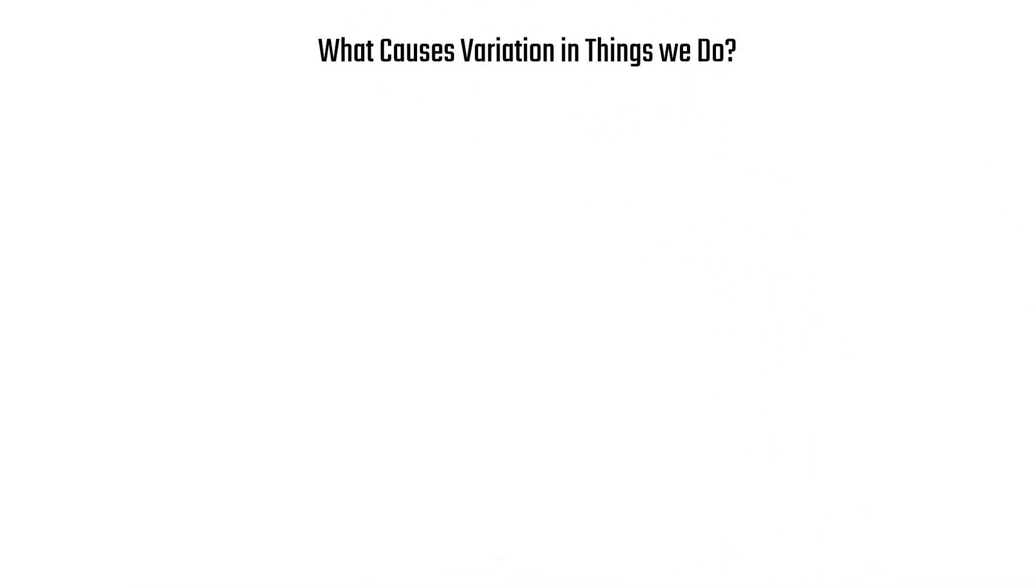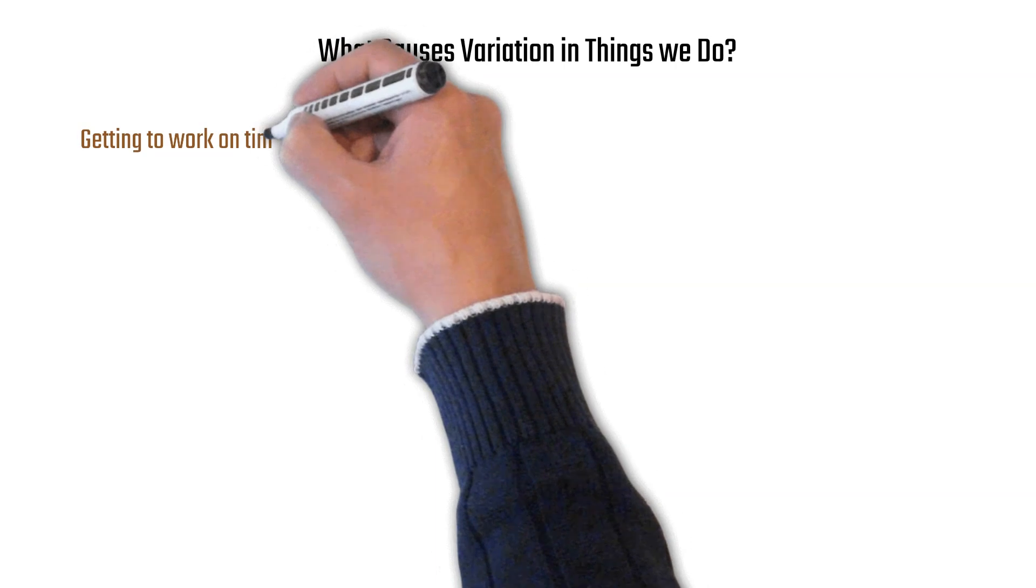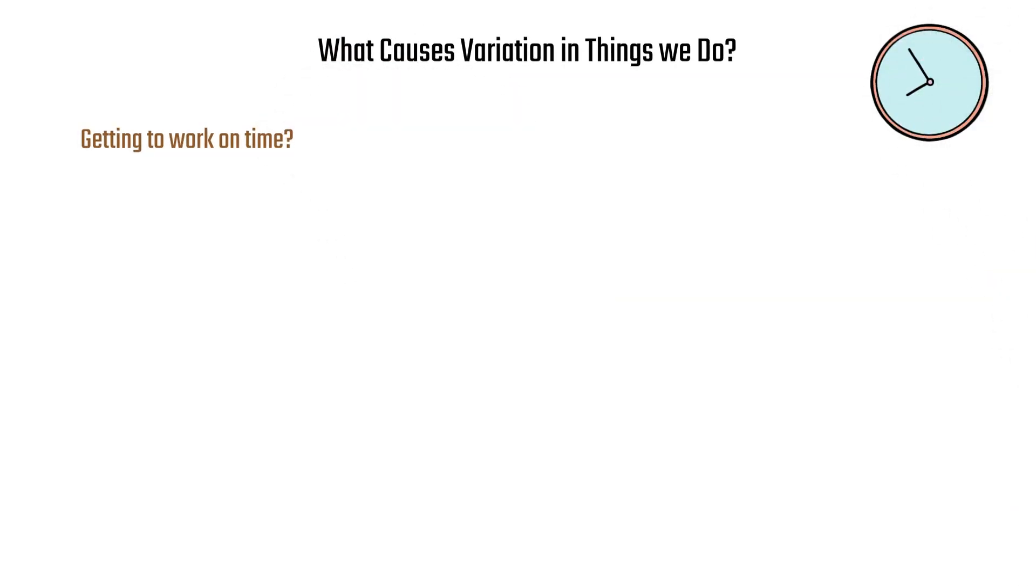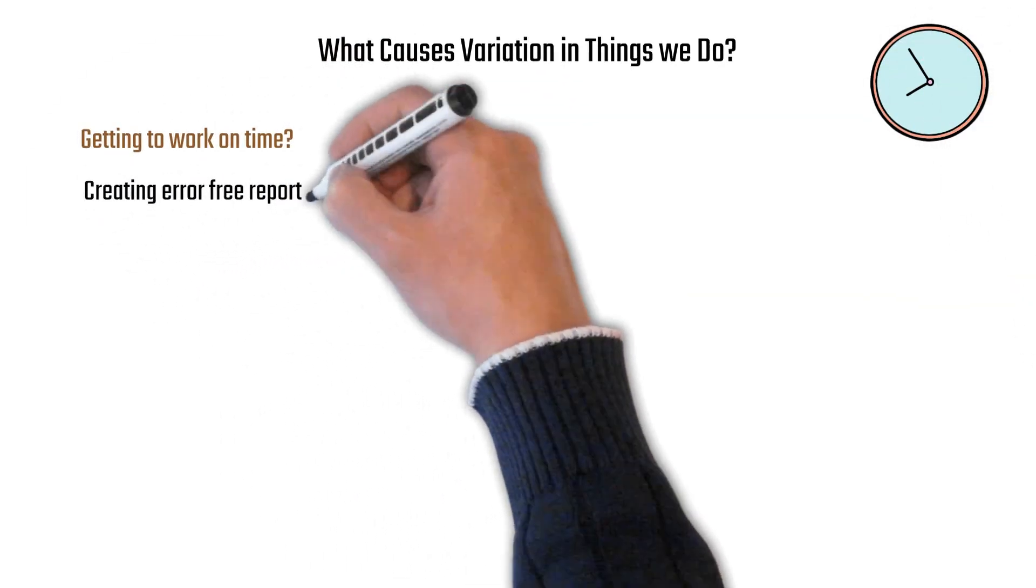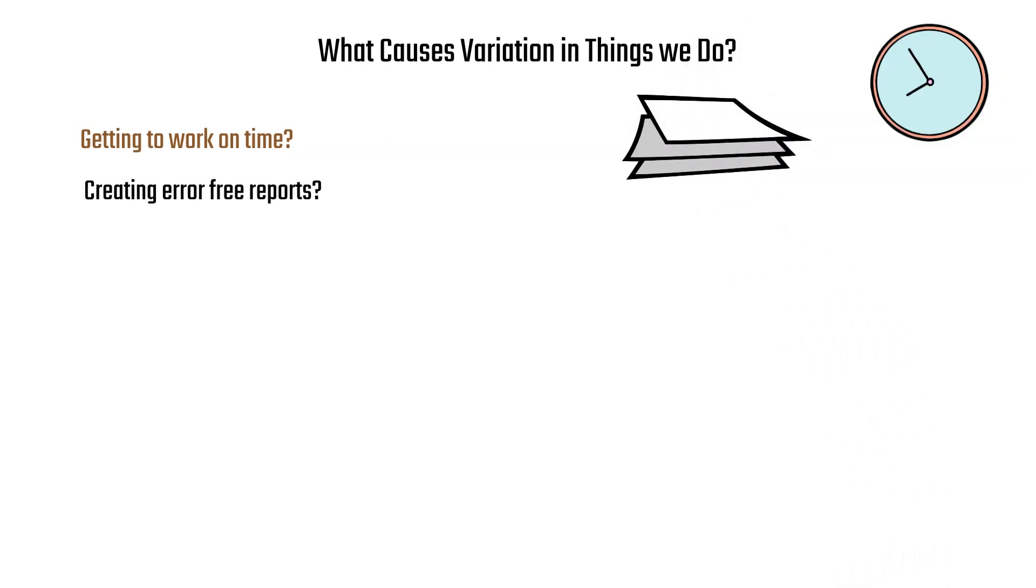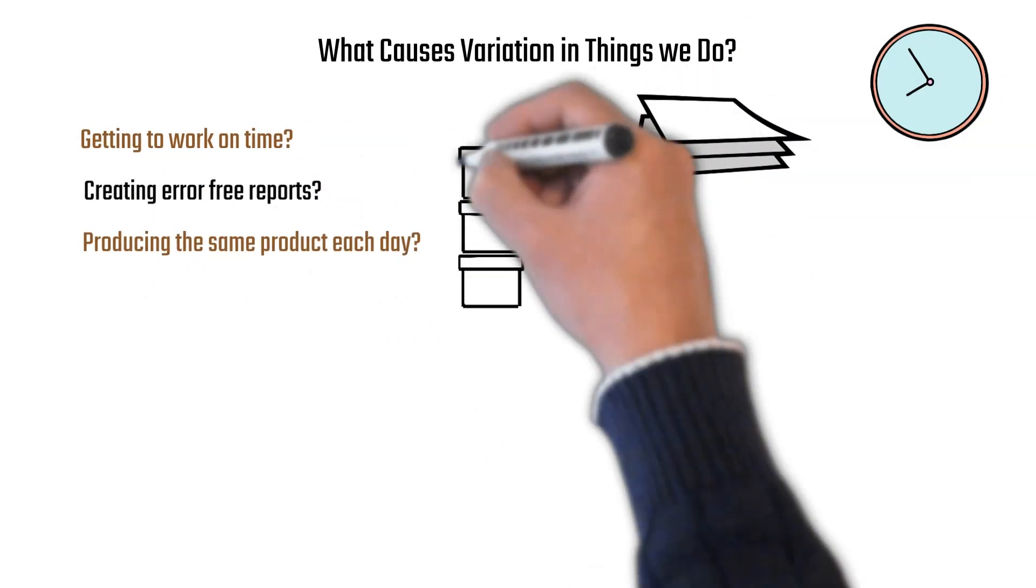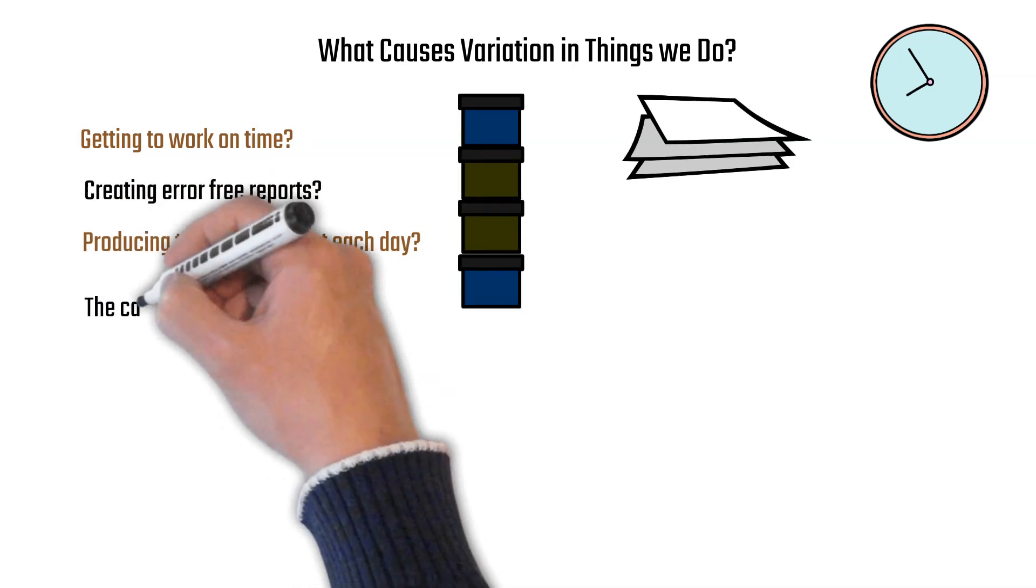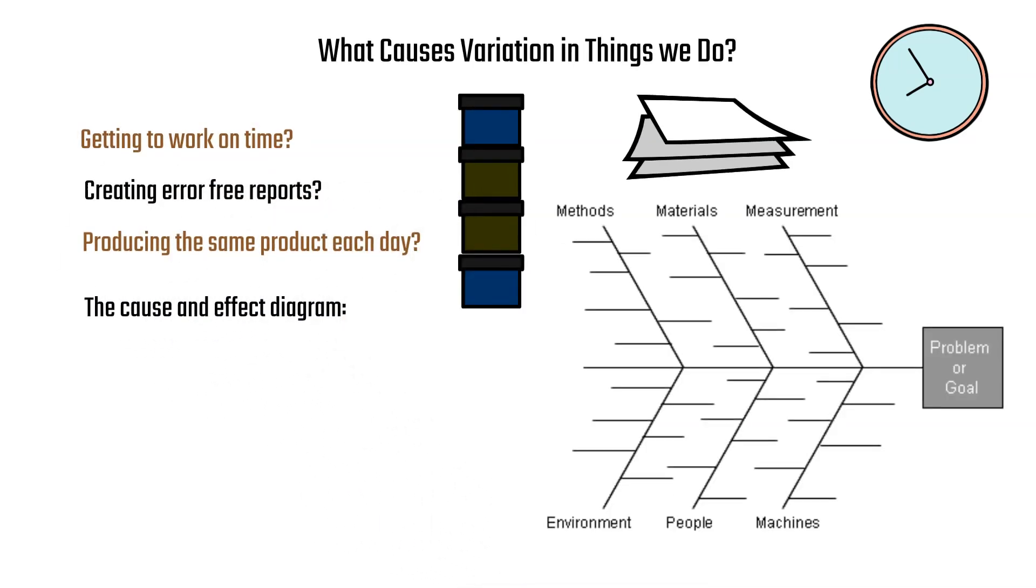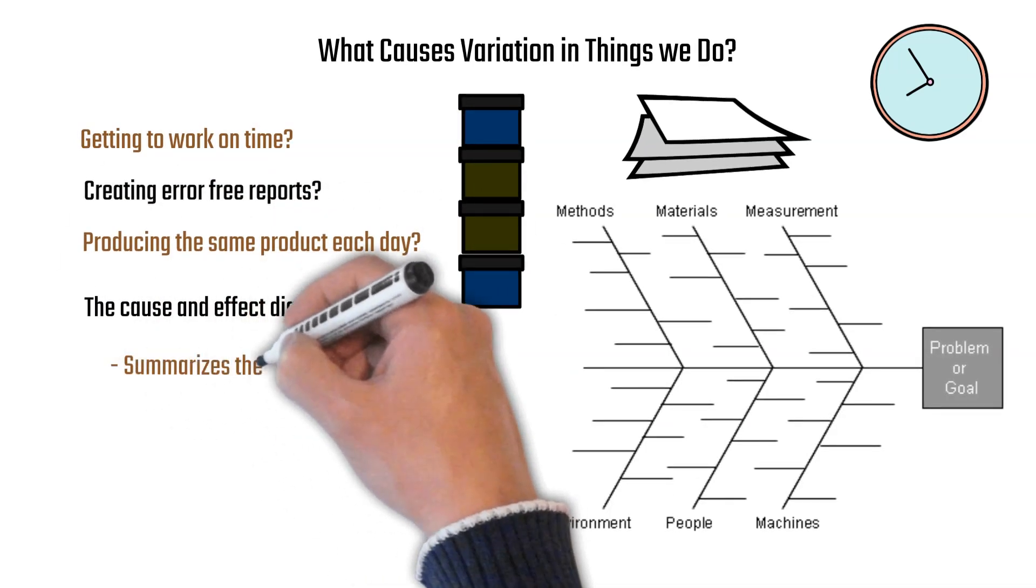So what causes variation in the things we do? Getting to work on time - we don't always get to work at the same time each day. How come some reports have errors and others don't? How do we produce some product in spec one day but not the other? The cause and effect diagram helps us figure that out.